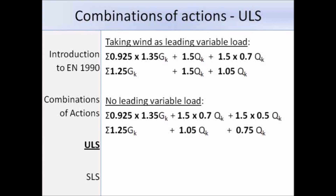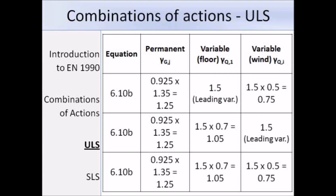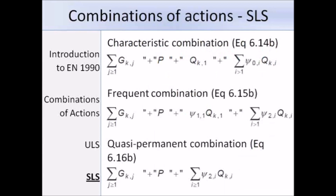You can use either equation 6.10 or the lesser of 6.10a and 6.10b. Here is a summary of the factors worked out in tabular form, showing the factors for equation 6.10b — you need to consider all possible combinations. I also want to show the combinations used in serviceability limit states: equations 6.14b, 6.15b, and 6.16b for characteristic, frequent, and quasi-permanent combinations. These can be used in a similar way to equations 6.10, 6.10a, and 6.10b, but using the serviceability limit state partial factors.